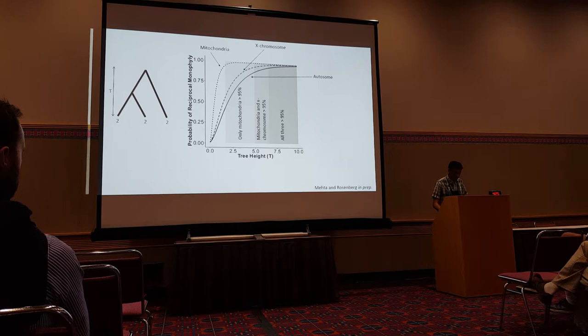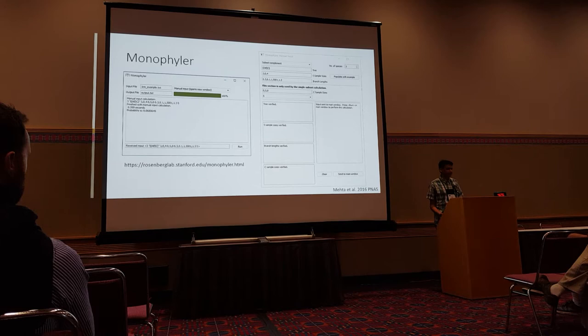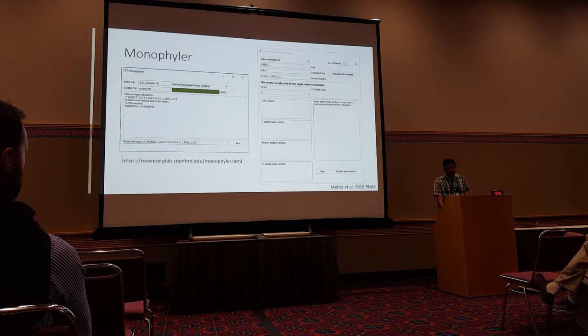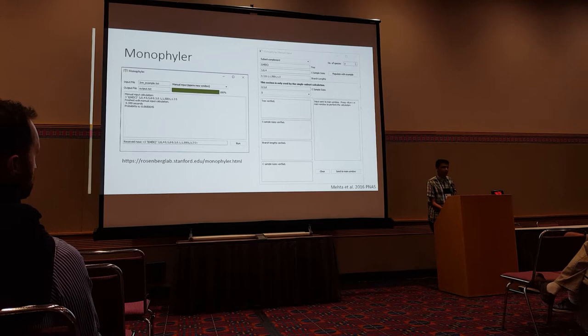I implemented all these computations in a software package called Monophyly, available on my advisor's website. It has a GUI if you don't want to use the command line, and it computes the probability of monophyly for a single subset of sampled lineages, or reciprocal monophyly for three or four species.